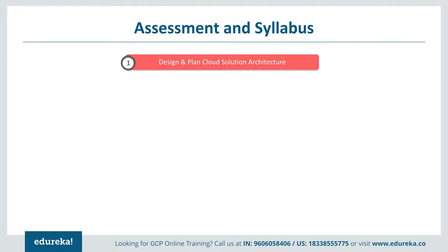Moving to the assessment and syllabus of the Cloud Architect exam: the first section is designing and planning a cloud solution architecture. One should be good at designing solution infrastructure that meets business as well as technical requirements. Topics include business use cases, product strategies, cost optimization, supporting application design, integration and trade-offs. Designing network, storage and computing resources covers topics such as integration of on-premises with multi-cloud environments, identification of data storage needs and mapping to storage systems, data flow diagrams, migration, licensing, network and management planning, and proof of concept.